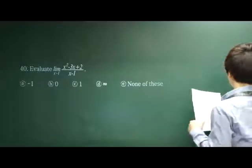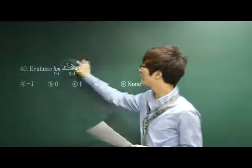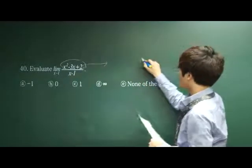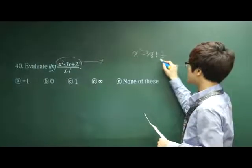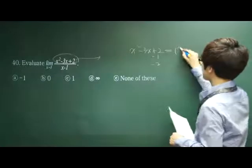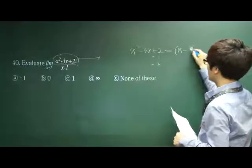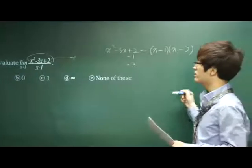The first thing you need to do for this kind of question is that you should factor the denominator first. So we are given x squared minus 3x plus 2. If you factor this, it is negative 1, negative 2. Therefore, it is x minus 1 and x minus 2.